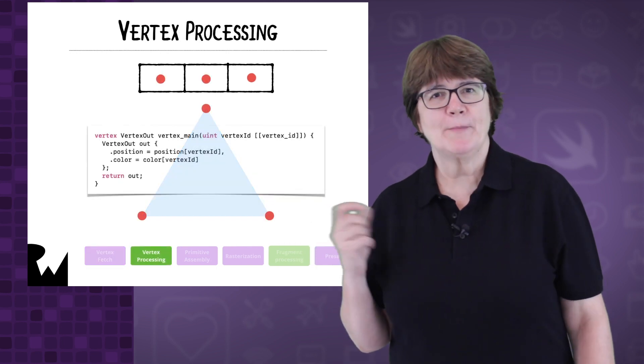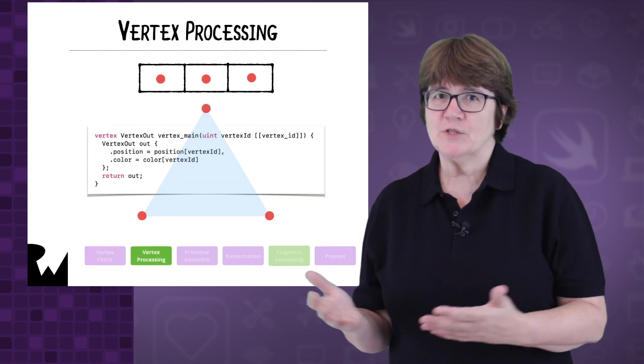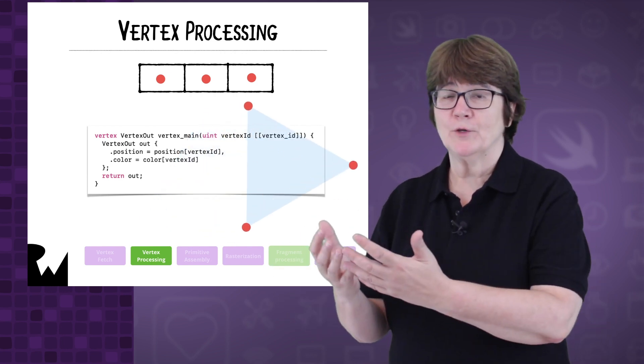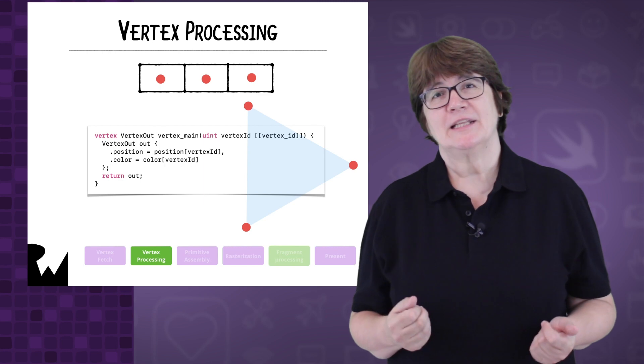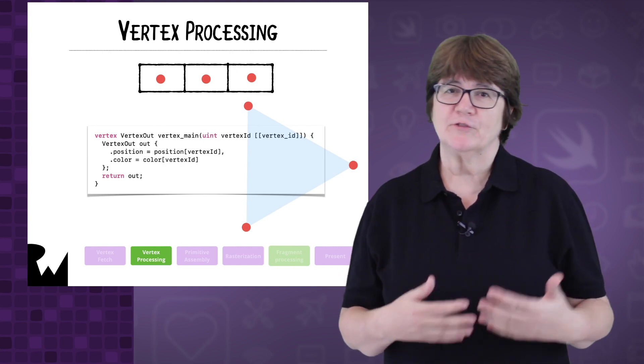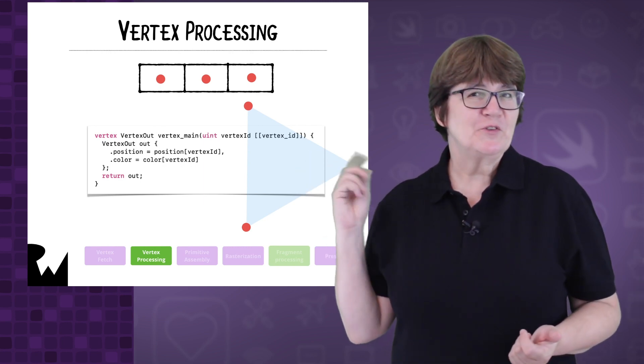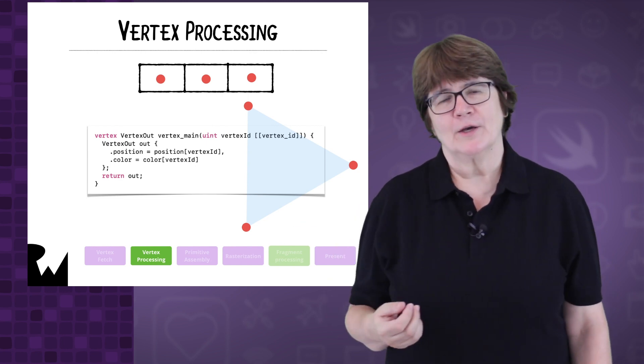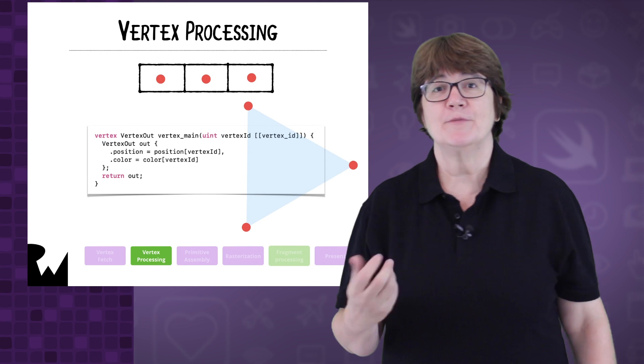The GPU scheduler passes these grouped vertices to the vertex processing stage. This is a programmable stage where we can position vertices using a vertex function. This function is stored on the GPU. It's written in Metal shading language, which is a language based on C++. Notice the semicolon at the end of the return statement. Don't worry if that code looks confusing. We'll be going over every bit of it.